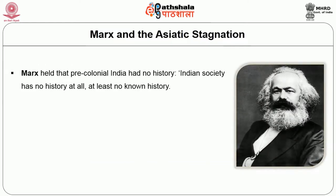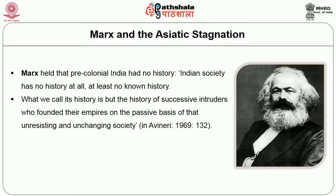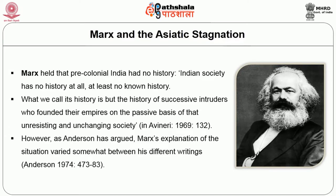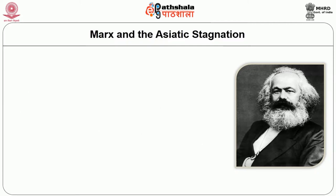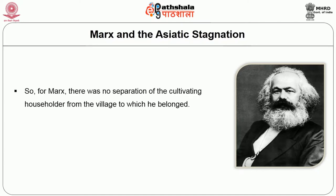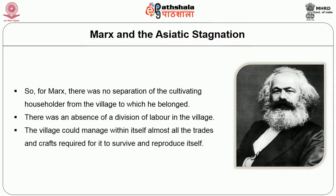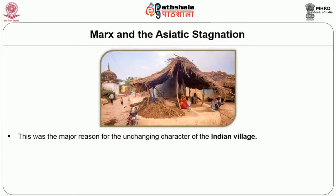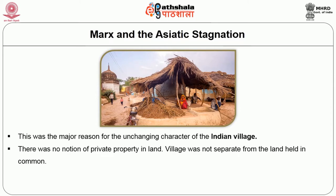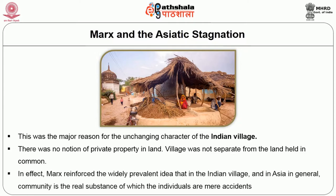Marx held that pre-colonial India had no history. What we call history is but the history of successive intruders who found their empires on the passive basis of that unresisting and unchanging society. For Marx, there was no separation of the cultivating householder from the village to which he belonged. Secondly, there was an absence of division of labour in the village — it could manage almost all the traits and crafts required to survive and reproduce itself. Finally, there was no notion of private property; the village was not separate from the land held in common. Marx reinforced the prevalent idea that in the Indian village, community is a real substance of which individuals are mere accidents.